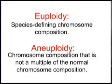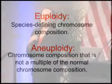Let me define the word aneuploidy for you. Aneuploidy means not euploid. Euploidy is defined by the species-defining chromosome composition — each species has its particular chromosome content, and euploidy says that a cell or organism has that species-defining chromosome composition. When a cell or organism is aneuploid, it has a chromosome composition that is not a multiple of the euploid chromosome content.